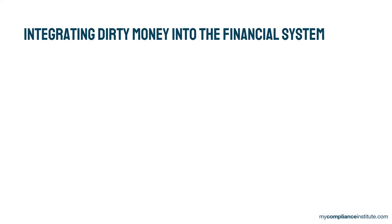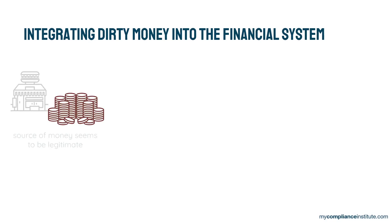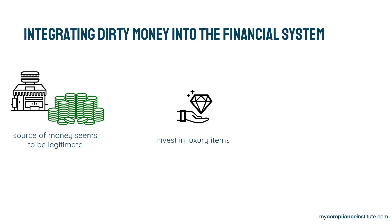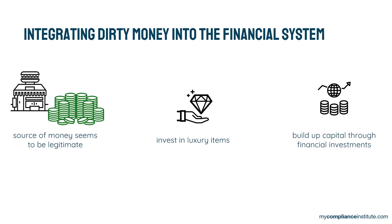Next is the integration phase — the use of seemingly clean money. Now that the origin of the money seems to be legitimate, coming from the hamburger joint, the criminal can make use of this money for financing a luxurious lifestyle, or build up capital through financial investments, or facilitate the use of these investments for future money laundering schemes. They can make use of commercial or industrial investments, acquisition of real estate, etc. There are various options for integrating dirty money into the financial system.